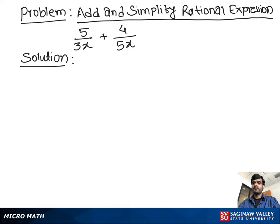Add and simplify rational expression: 5 over 3x plus 4 over 5x. Now let's solve this problem. 5 over 3x plus 4 over 5x. First we have to see, does both terms have same denominator or different denominator? As you see, first term has 3x, other term has 5x. It means both terms have different denominators.